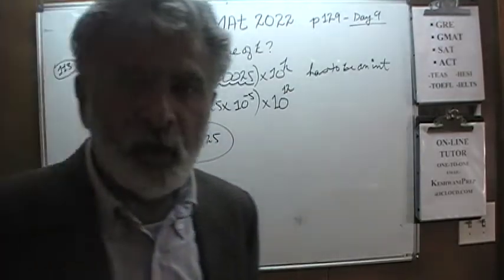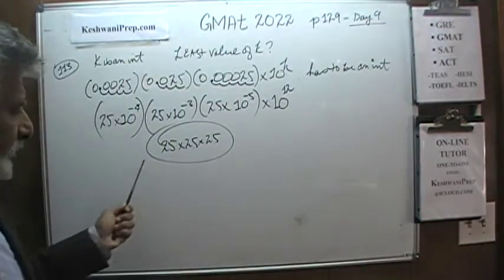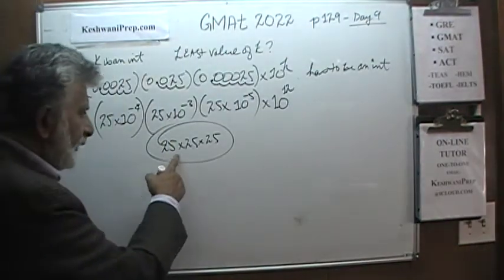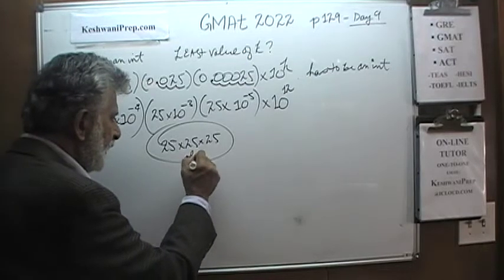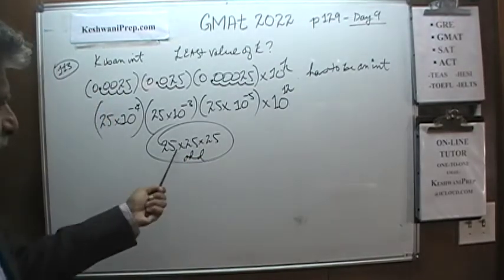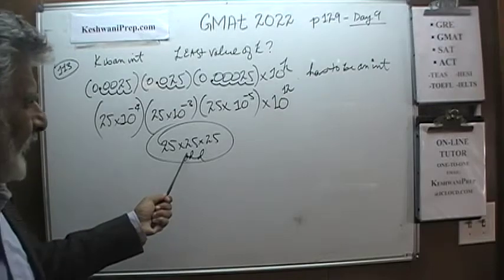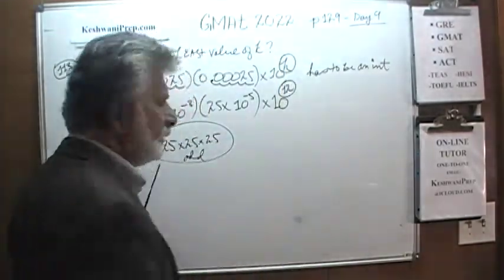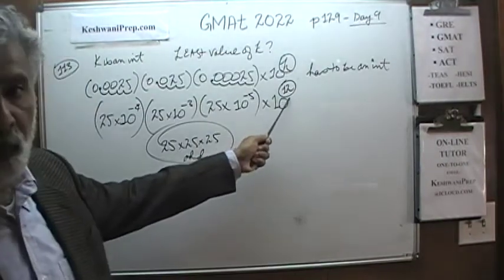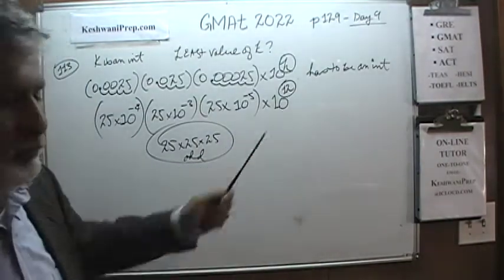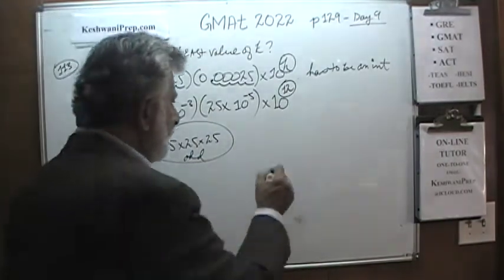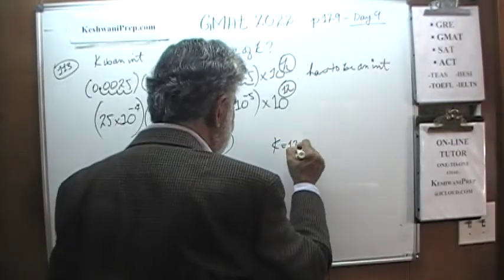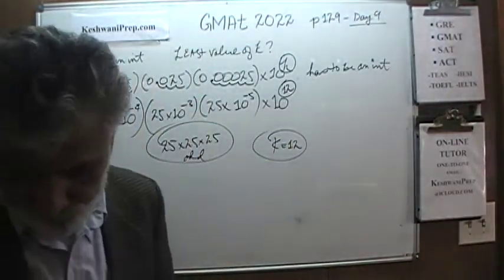If K equals 12, then 10 to the 12 cancels the 10 to the negative 12, leaving 25 times 25 times 25, which is an integer. This product is not a multiple of 10, since odd times odd times odd is odd — it ends in 5. So no additional powers of 10 are needed. The least possible value of K is 12. It could be 13, 14, or larger, but 12 is the smallest.